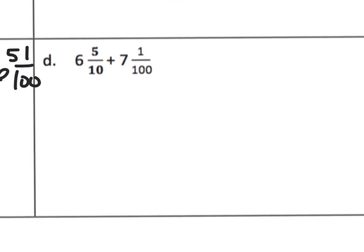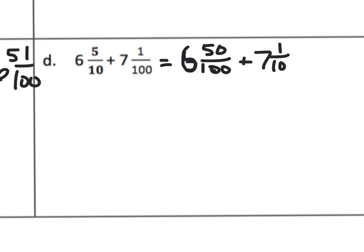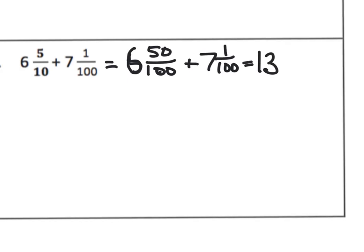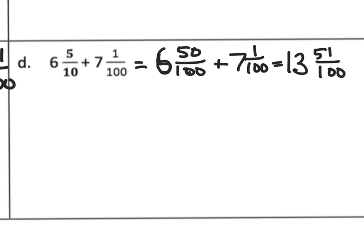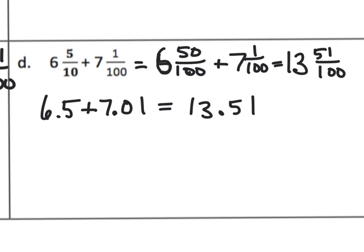Let's look at question D. This ends up being six and fifty hundredths plus seven and one hundredth, and that equals thirteen — because we added the six and the seven — and fifty-one hundredths. So in decimal form, six and five tenths is six point five, plus seven and one hundredth becomes seven point zero one. Six and seven is thirteen.